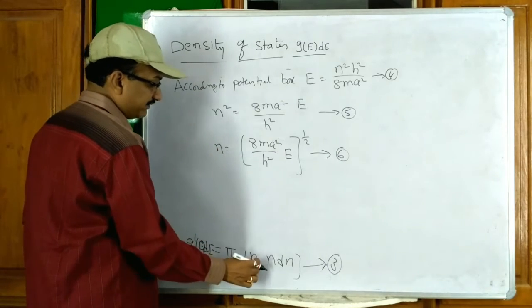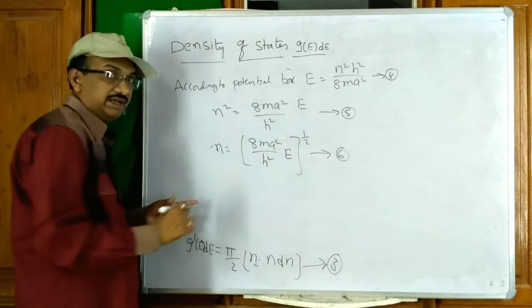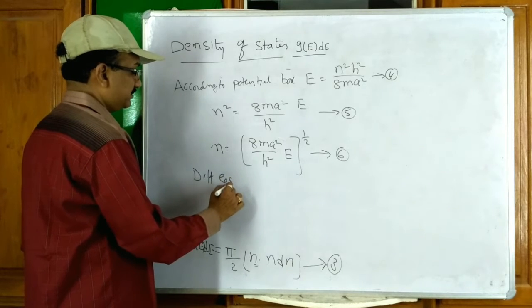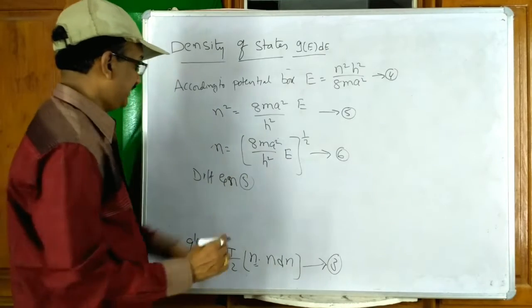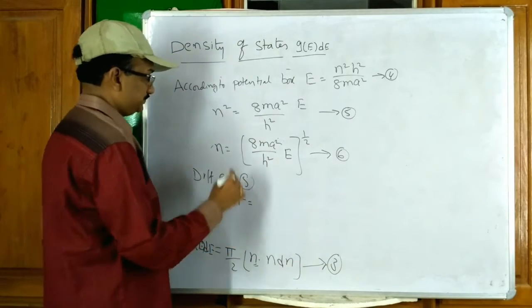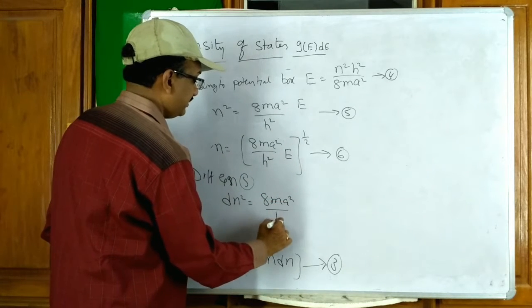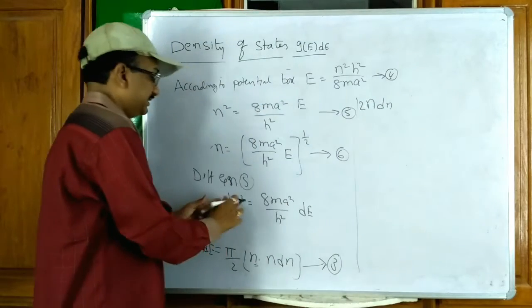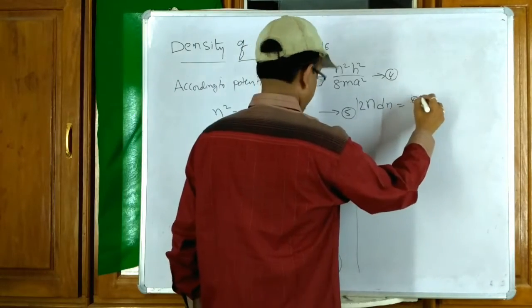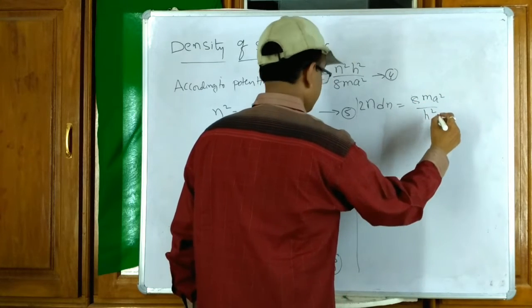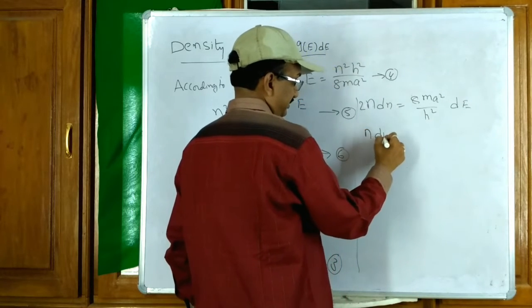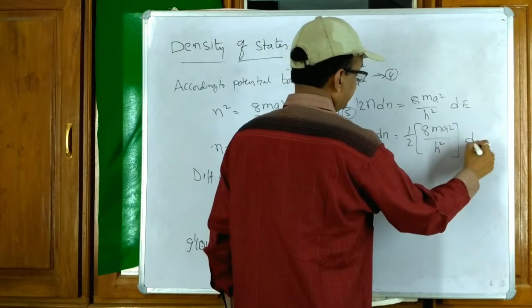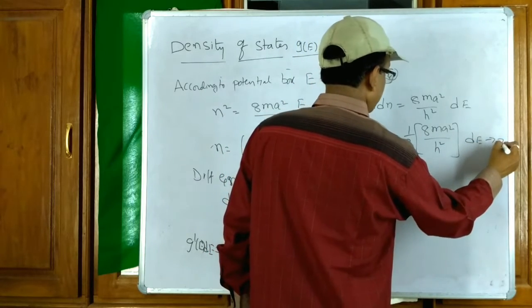Now we need N and NdN values to substitute into Equation 3. We have found N. To find NdN, differentiate Equation 5: d(N²) = 8MA²/H² · dE, so 2N·dN = 8MA²/H² · dE. Therefore NdN = (1/2)(8MA²/H²)dE. This is Equation 7.